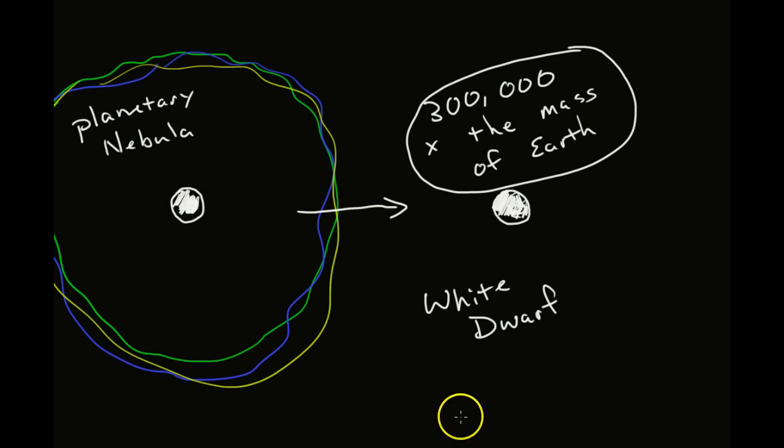Because it's in such a stable state where it doesn't need any nuclear fusion. It doesn't need any fuel to exist. So that is the life cycle of a low-mass star.